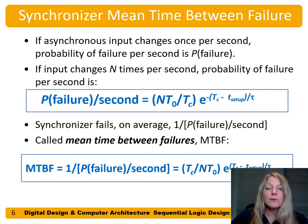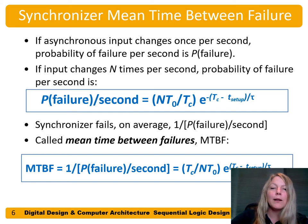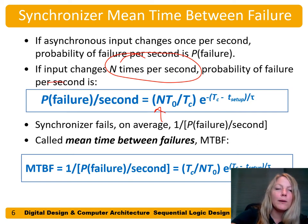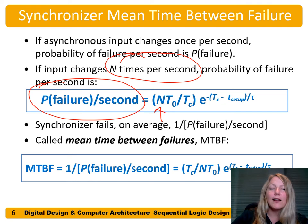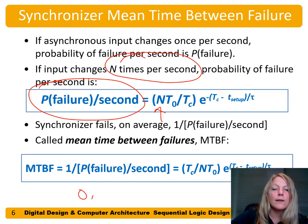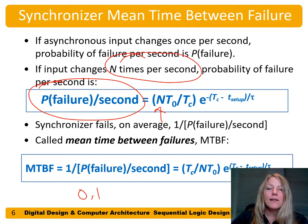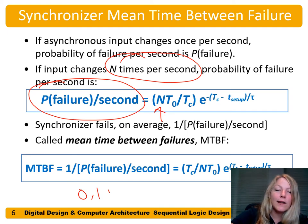We also have two other measures: the probability of failure per second. Every time we press a button, we get some probability of failure. If we're pressing that button N times per second, we multiply that probability of failure times N per second to get the probability of failure per second. For example, if there's a dartboard and some probability that I'm going to hit a certain block region — say that probability is 0.1 — and I throw that dart 5 times per second, then 0.1 times 5 gives 0.5 failures per second.